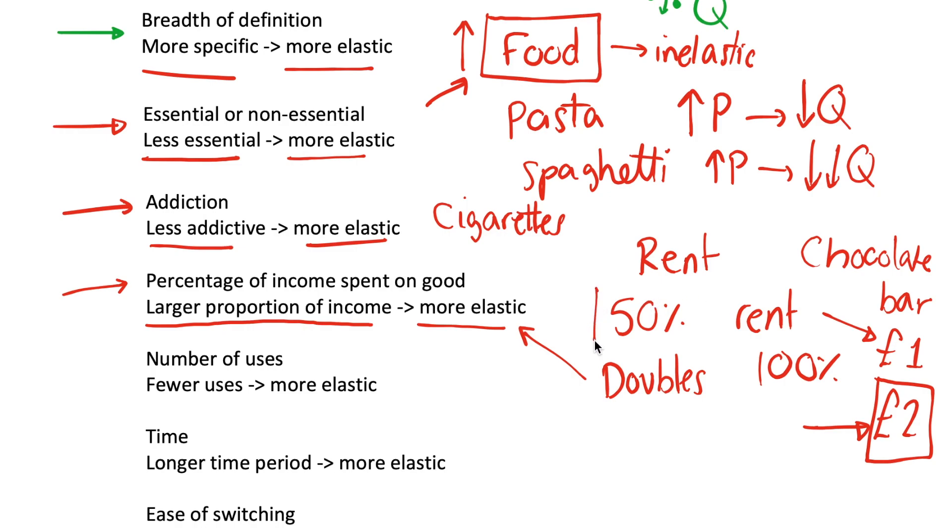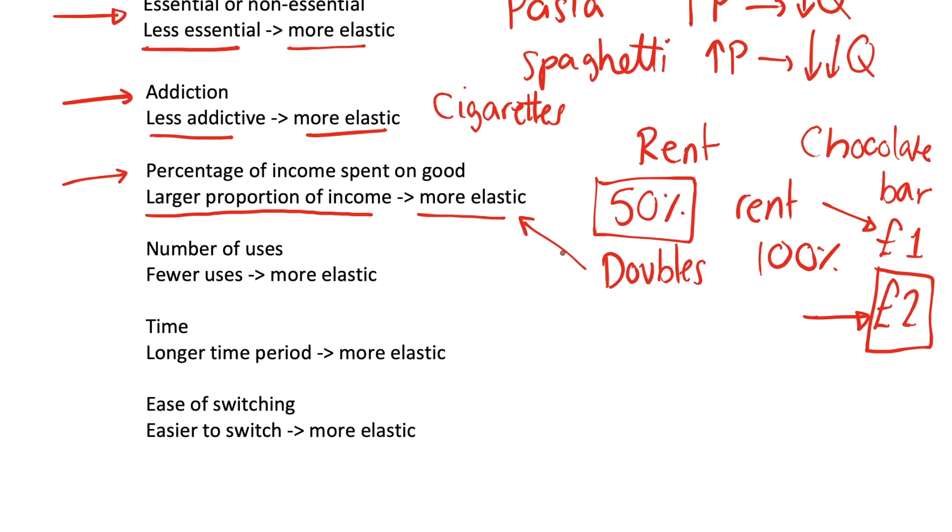Whereas rent, if something that takes up a lot of your income, like 50%, it doesn't even need to double. If it just increases by some amount, say 10%, your rent increasing by 10% is still going to be a big thing, and you may have to consider moving houses. So that's another factor.